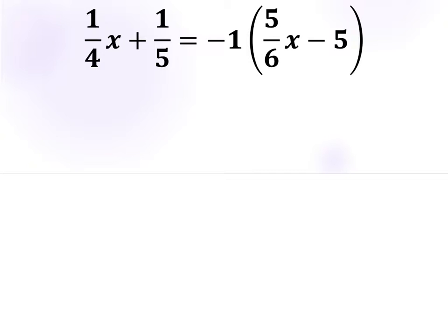Hey you guys, it's Mr. Sal, just doing another problem. This one was requested by a student, so here we go. We've got one-fourth x plus one-fifth equals negative one times the quantity five-sixths x minus five.